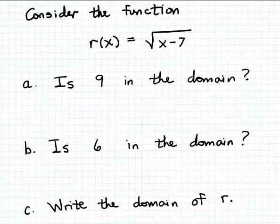The first question is: Is the number 9 in the domain? So what that means is if we use 9 as input to the function r, will the matching output be meaningful? In this case, since we don't know how this function is being applied in practice, we don't know what the input quantity is measuring or what the output quantity is measuring. A meaningful output value is just a real number output value.